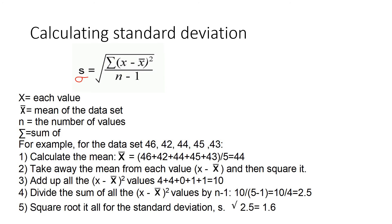Some exam questions might ask you to explain the steps needed to calculate standard deviation. For the data set 46, 42, 44, 45, and 43: step 1 is calculating the mean — 46 plus 42 plus 44 plus 45 plus 43 divided by 5 equals 44. Step 2 is taking away the mean from each value, so for example 46 minus 44, and then squaring each result.